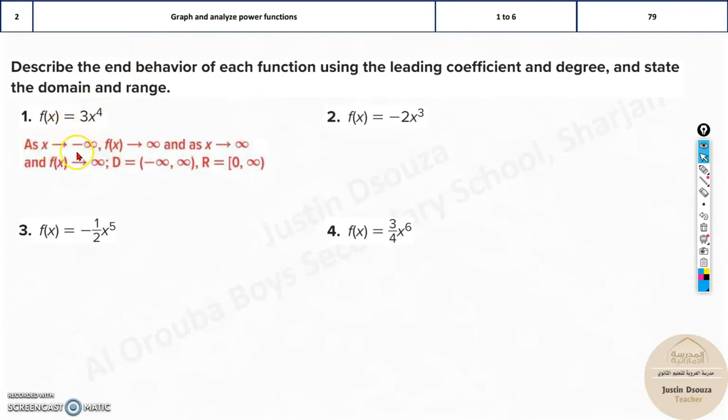This is again a parabola, so it's positive. If it's a positive parabola, it just opens upwards. So as x tends to minus infinity or plus infinity, f(x) is always positive infinity. Whereas the domain is all real numbers, range is all numbers greater than or equal to 0. Why? Because it starts from here now. So 0 to positive infinity.